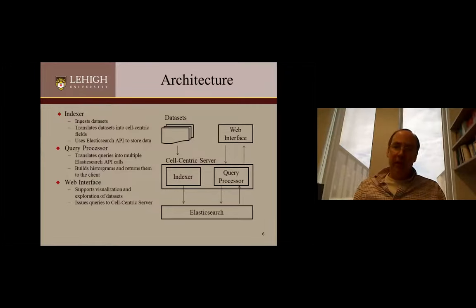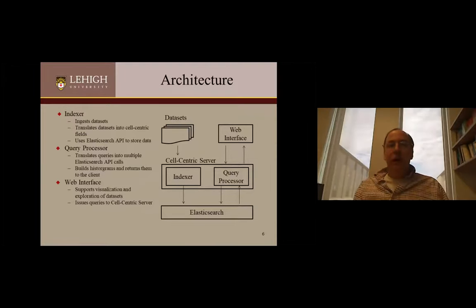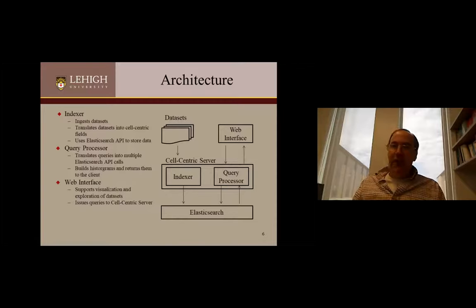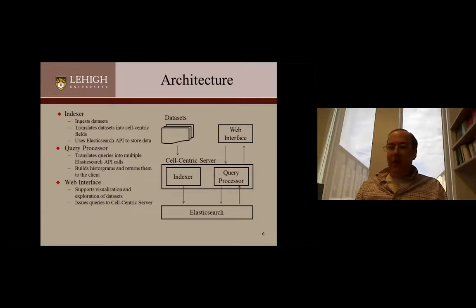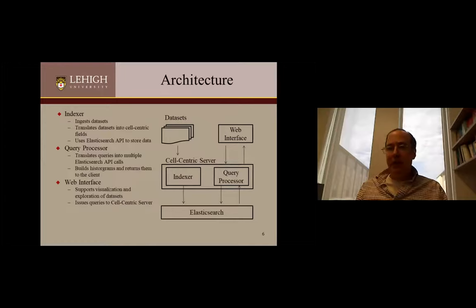I want to give you a sense of what we can do with this approach in terms of the general system design. What we've implemented is middleware that sits between an Elasticsearch server and the user or the data sets. Our cell-centric server has two main components: an indexer and a query processor. The indexer's job is to ingest data sets, translate those into cell-centric fields, and then use an Elasticsearch API to store the data. The query processor takes in queries, translates those into a series of Elasticsearch API calls, builds histograms that are returned to our web interface, which supports visualization and exploration of the data sets.